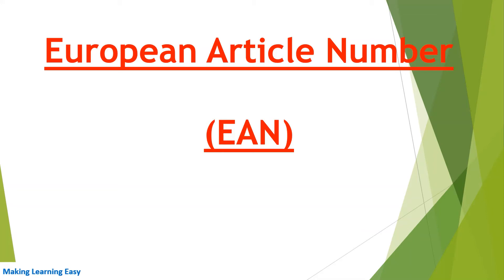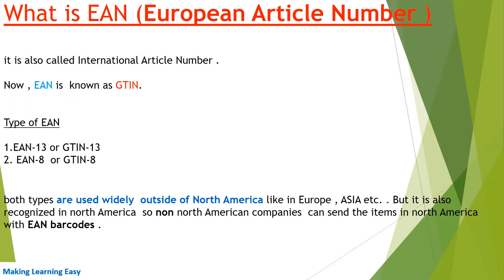Hello everyone, welcome to the session. In this session we are going to discuss about European Article Number, in short EAN. Let's begin. What is EAN? It is also called International Article Number, and now it is known as GTIN. There are two types of EAN: EAN-13, which is also known as GTIN-13, and EAN-8, which is also known as GTIN-8.